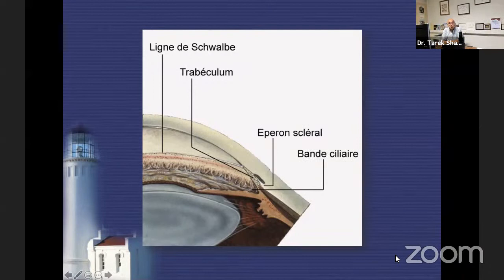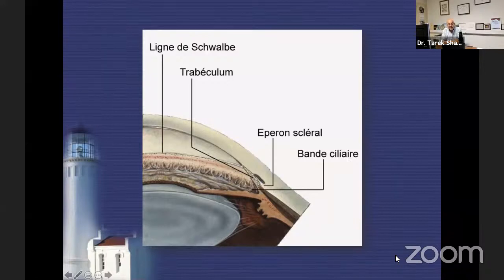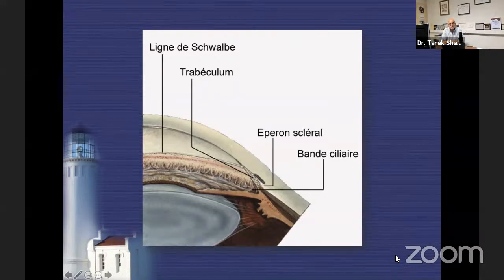To be very honest, I don't use those classifications at all in my practice. I need to know if the angle is open or closed and if it is closed, why is it closed. I look at the angle structures and always look for the trabeculum, because seeing the trabeculum tells you the angle is open, and not seeing it tells you it is closed. I ask my fellows and residents to divide the eye into four quadrants.